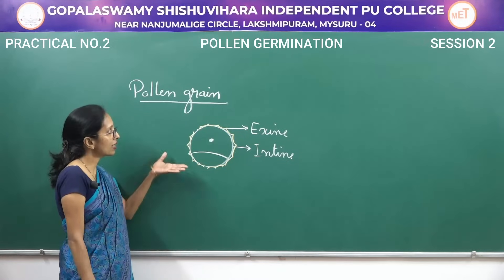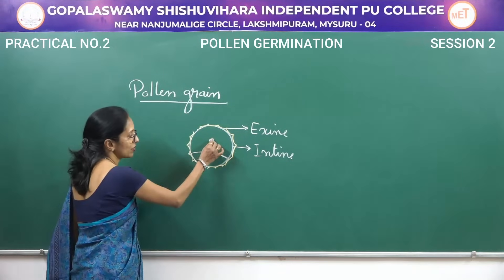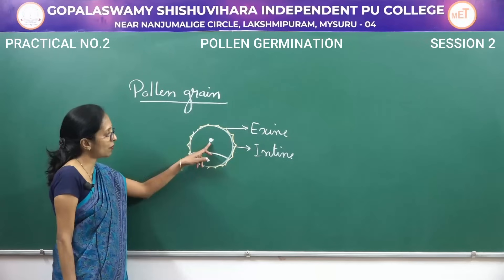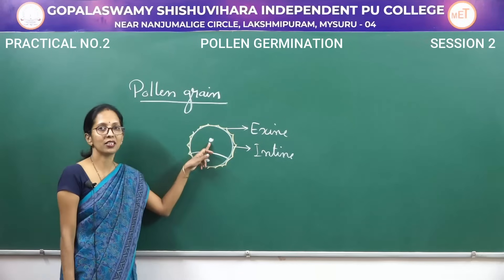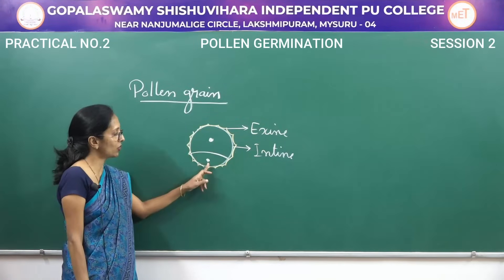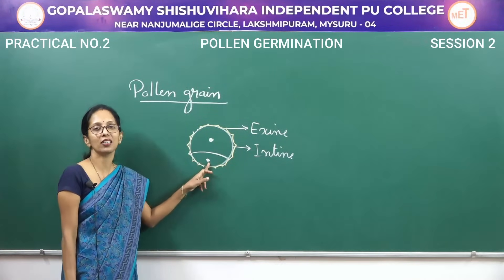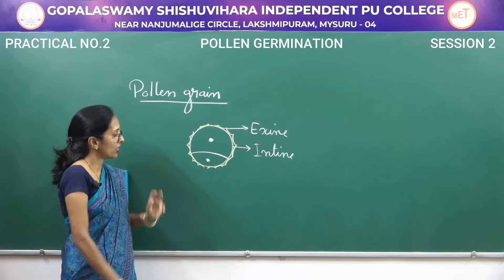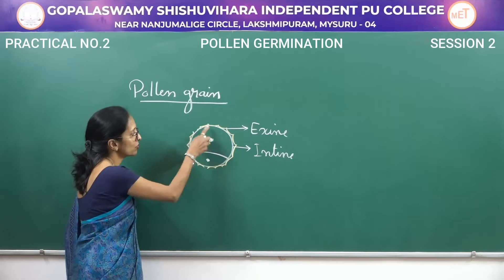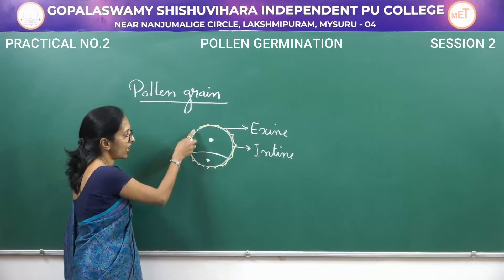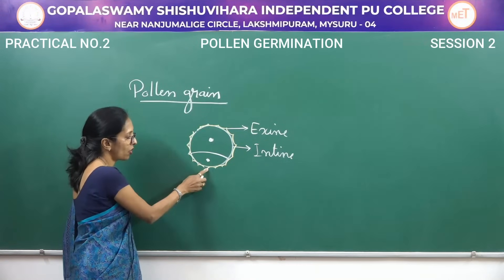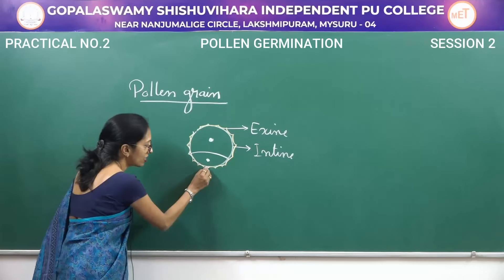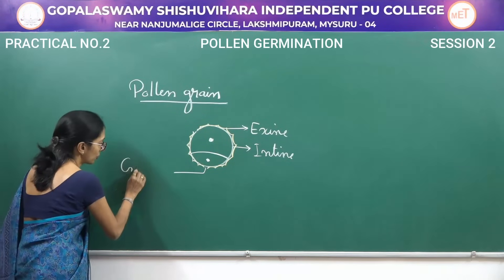Inside the pollen grain there is a presence of two cells. The upper one is said to be the vegetative cell and the lower one is said to be the generative cell. There are some places where there is an absence of exine, and this part is said to be the germ pore.